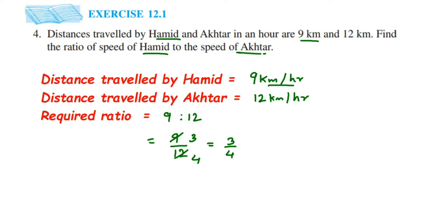When you convert this back into a ratio, the ratio will become 3 is to 4. So this is the required ratio. The ratio of speed of Hamid to the speed of Akhtar is 3 is to 4.